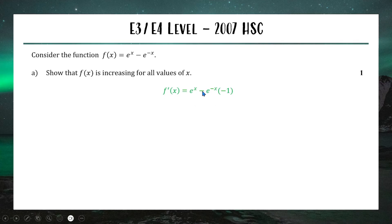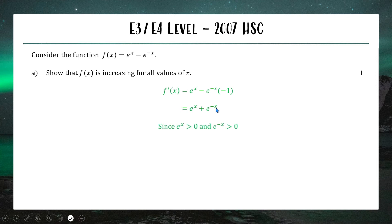Both eˣ and e⁻ˣ are always above the x-axis — one is exponential growth, the other exponential decay, but both are always positive. So eˣ + e⁻ˣ is always positive, meaning f′(x) > 0 for all x, which means the function is always increasing.